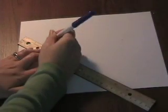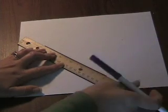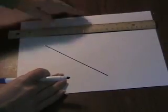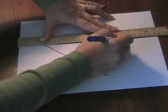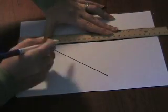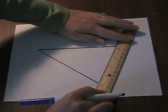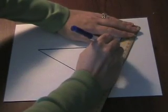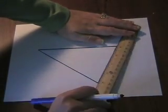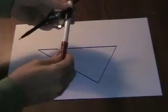Start with a large acute triangle. To find the circumcenter of the triangle, you'll construct the perpendicular bisector for each side of the triangle.